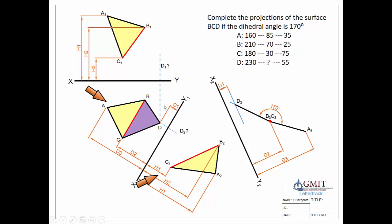Now we have D in our plan view and in our second auxiliary and we're able to work backwards. Having D in the second auxiliary, we project it back into our first auxiliary in line with our original line of sight, and where that crosses our dashed line locates point D in our first auxiliary, giving us the completed surface. Applying our 1-2 rule again to find the front elevation — counting back one view, two views — this view is now completed. We take this measurement and mark it off to locate the height in our front elevation, giving us point D1 and completing the surface.